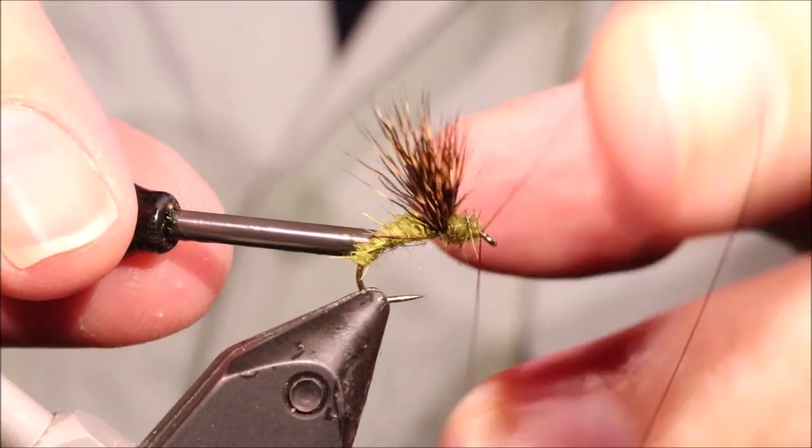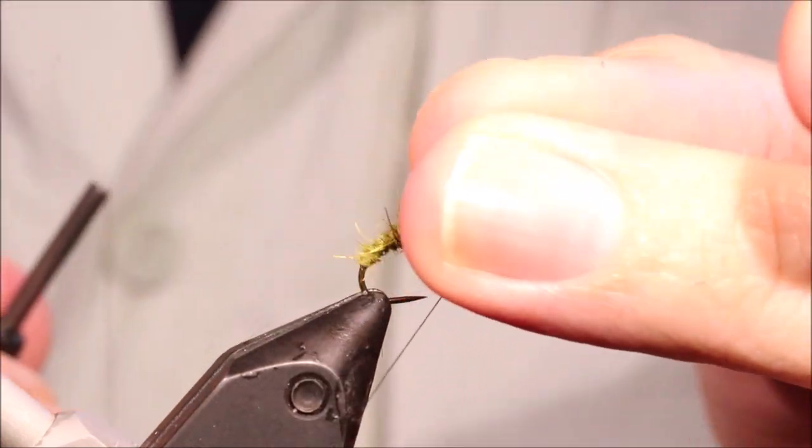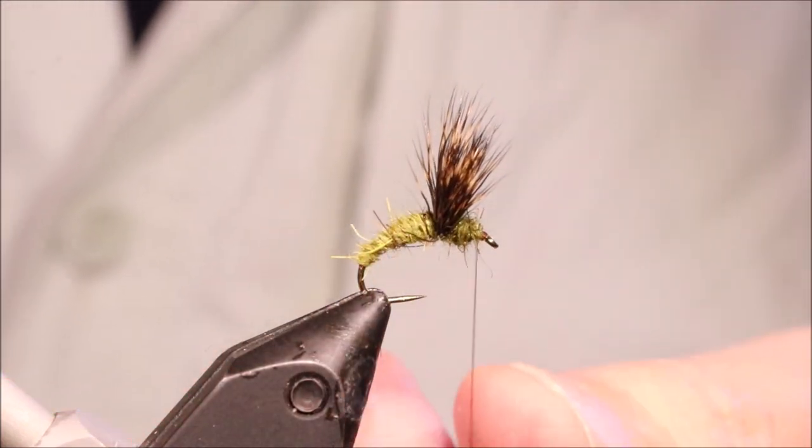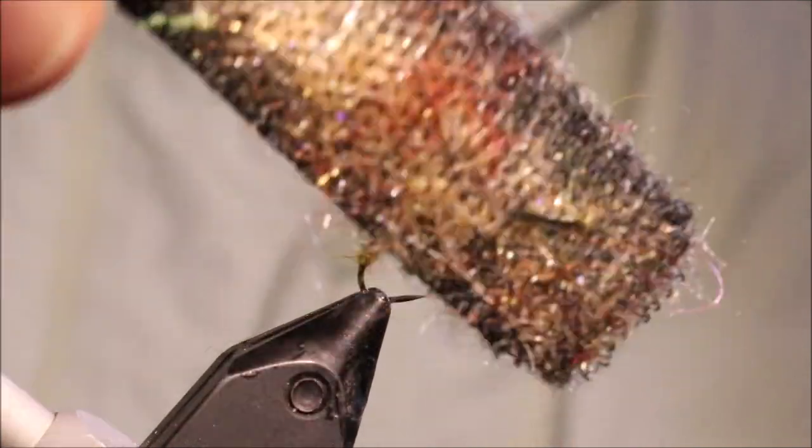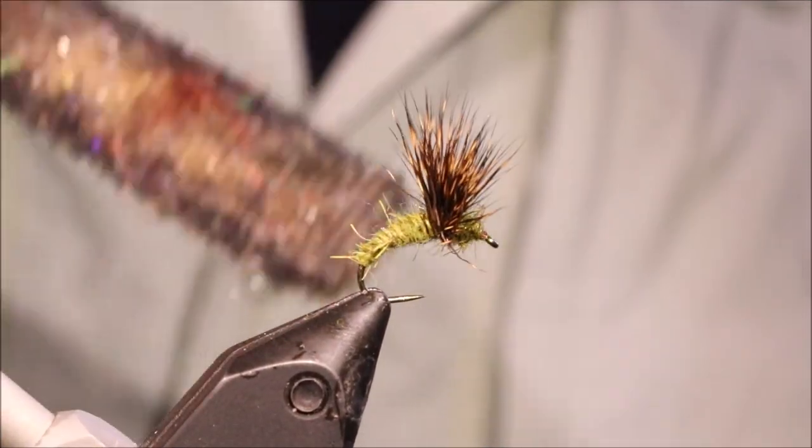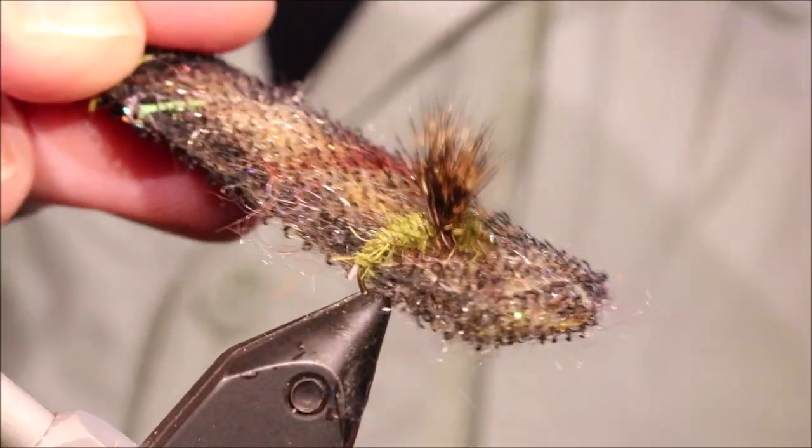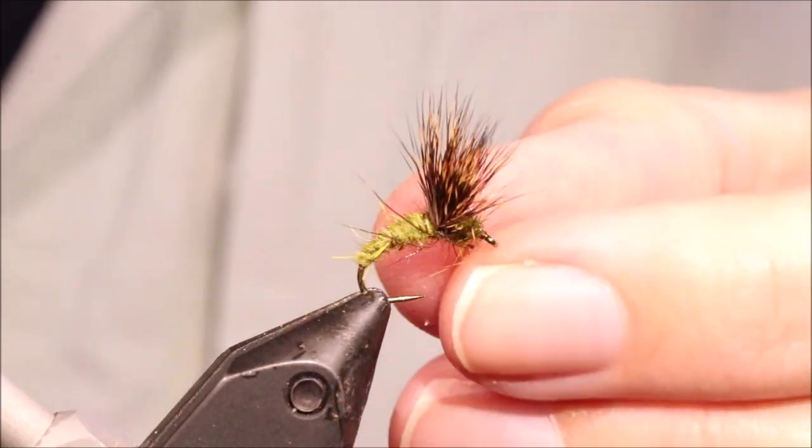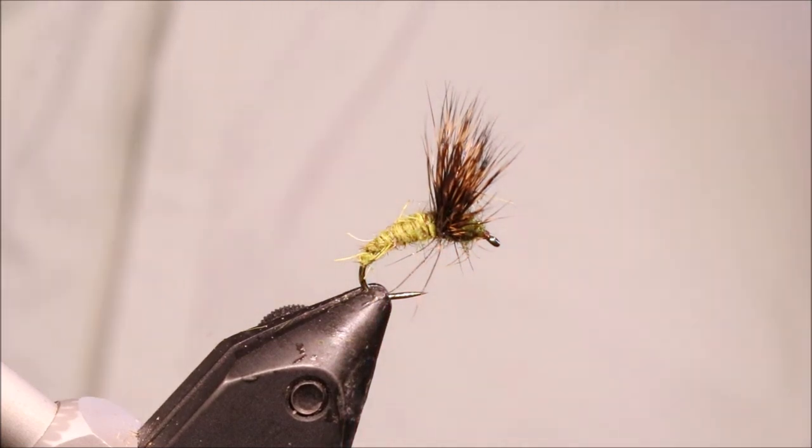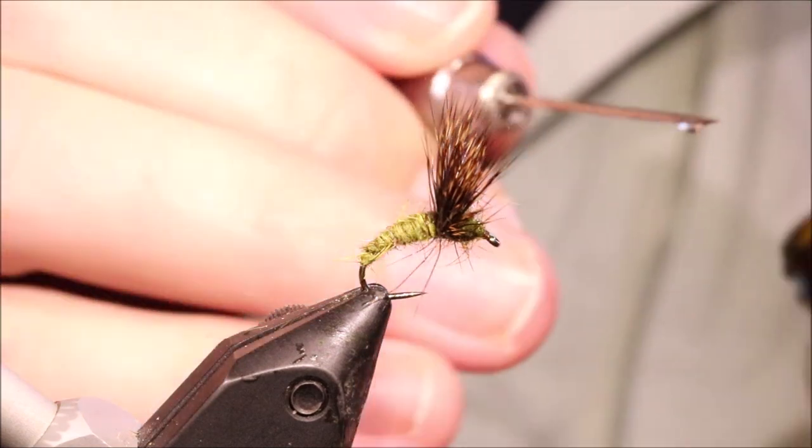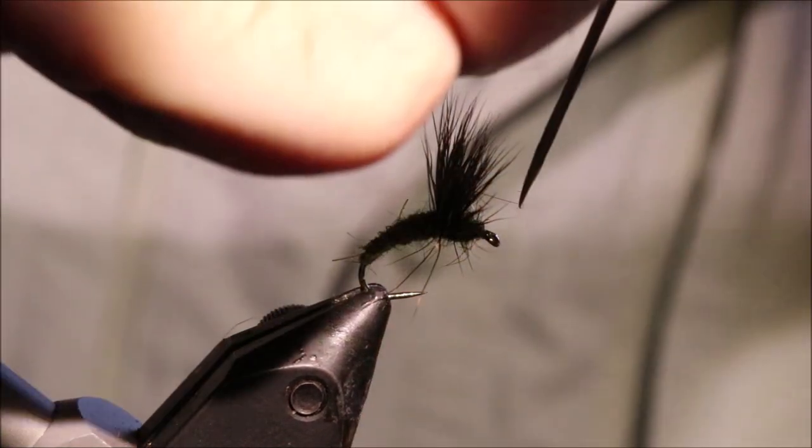And then a quick whip finish and you're done. Trim that away. Now, I do like to come in and just lightly rub that a wee bit with the velcro to pick out a couple of hairs to represent legs or whatever. It gives you that wee sort of fuzz, gives you a really nice appearance in the surface of the water. The last thing is just a wee bit of varnish on those thread wraps at the eye. And there you go.